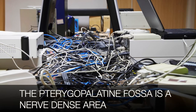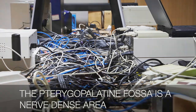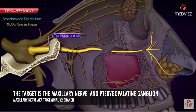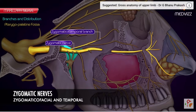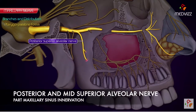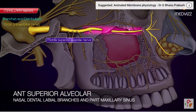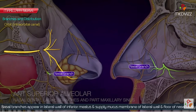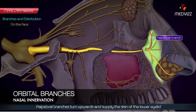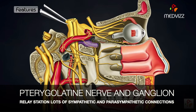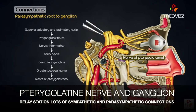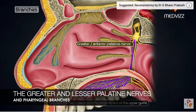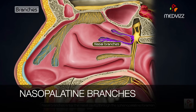The pterygopalatine fossa is a nerve-dense area. The target is the maxillary nerve and the pterygopalatine ganglion. Branches of the maxillary nerve include the zygomatic, posterior and mid-superior alveolar, anterior superior alveolar, and orbital branches. The pterygopalatine nerve and ganglion is a relay station for sympathetic and parasympathetic connections. Branches include the greater and lesser palatine nerves and the nasopalatine branches.